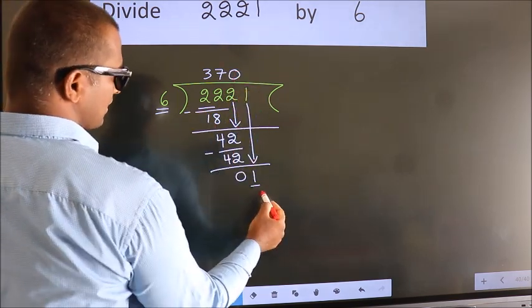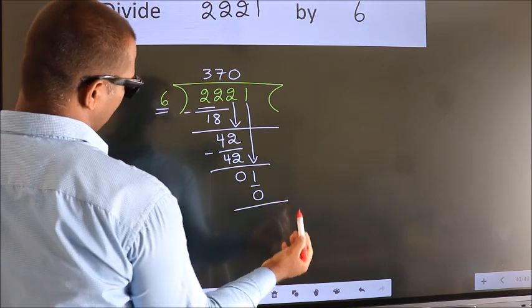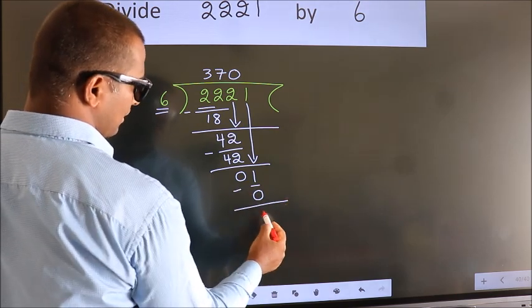So 6 into 0, 0. Now we subtract. We get 1.